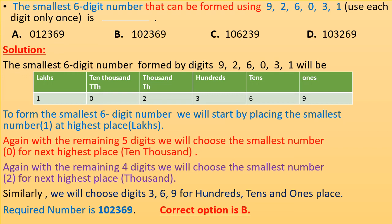We will place 1 at lakhs position. Now again from the remaining 5 digits we will choose the smallest number, that is 0, for next highest place, that is ten thousands. Now again we will choose the smallest number from the 4 digits, that is 2, and place it at thousands place. Similarly we will choose digits 3, 6, 9 for hundreds, tens and ones place. So the number formed will be 102369. Correct option is B.